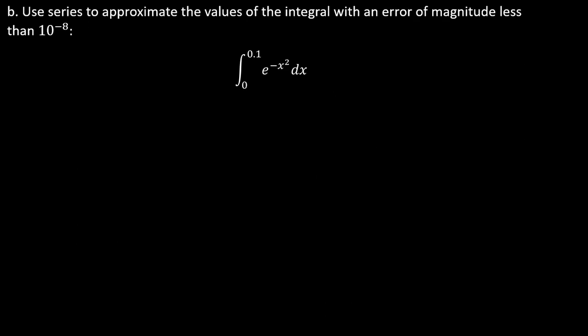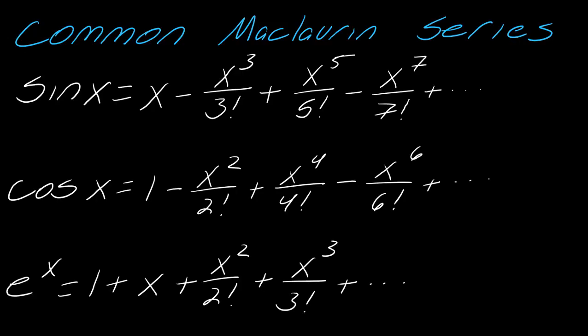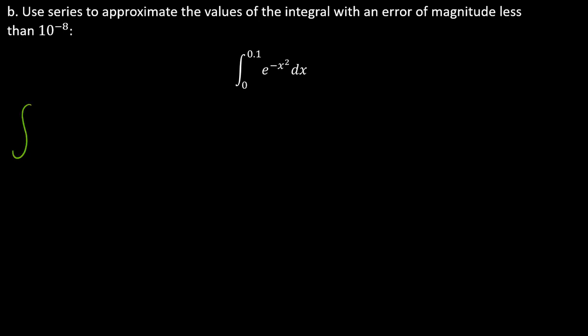Let's do it again with this same idea. I strongly suggest, if you are struggling with this, that you try this one on your own. I've kind of outlined the idea of this for you. First things first, I'm going to take my e to the x series. And where I see an x, I'm going to replace all the x's with negative x squared.